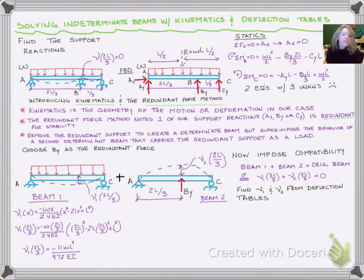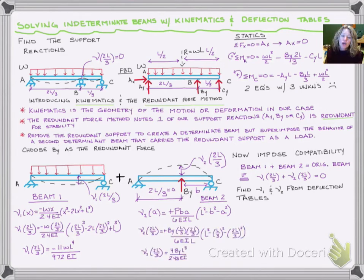For beam 2, we use our equation when X equals A. We know A is 2L over 3 and B is L over 3. We plug those values in and solve, but this time we get an answer in terms of BY.